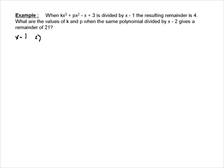So we're going to first use x minus 1. So in this case, we're going to have k times 1 cubed plus p times 1 squared minus 1 plus 3, so k gives us a remainder of 4. That's just using the remainder theorem.